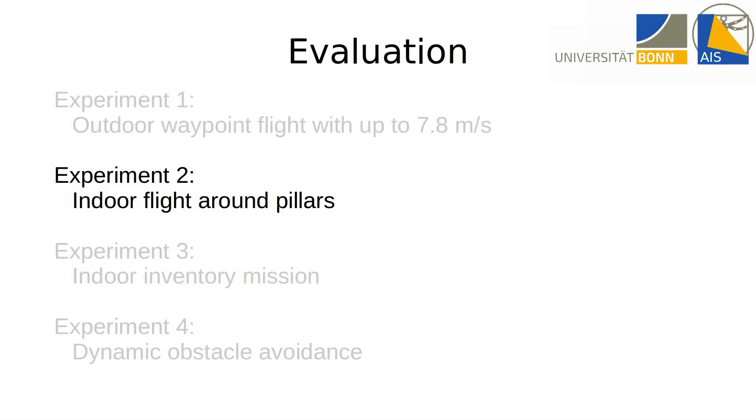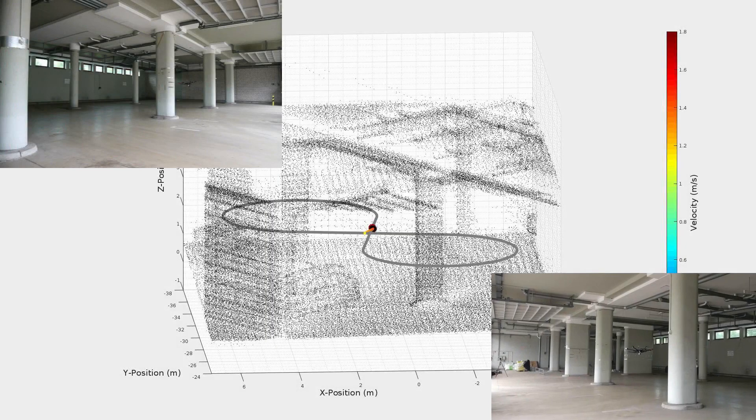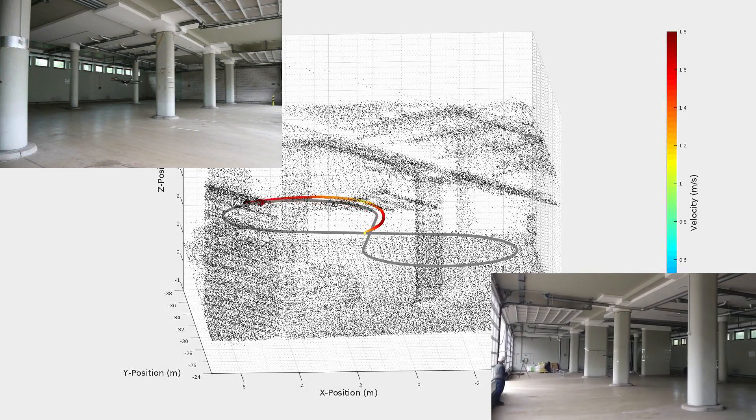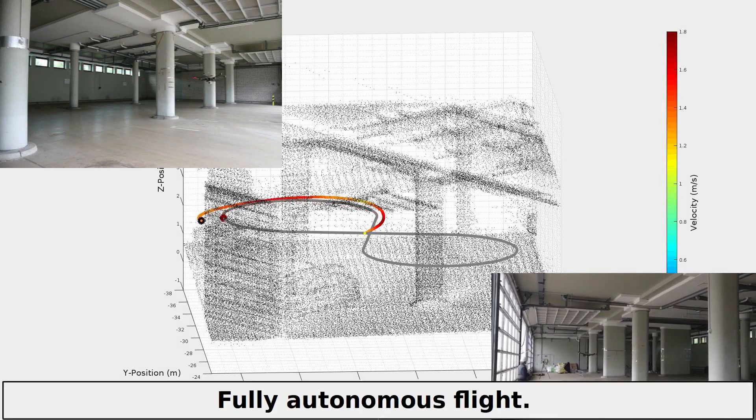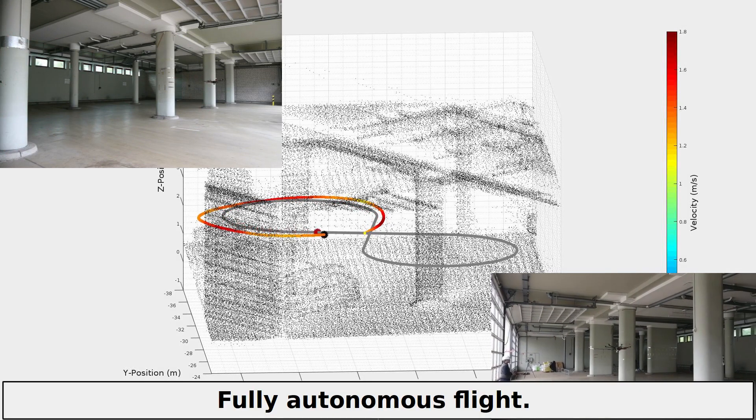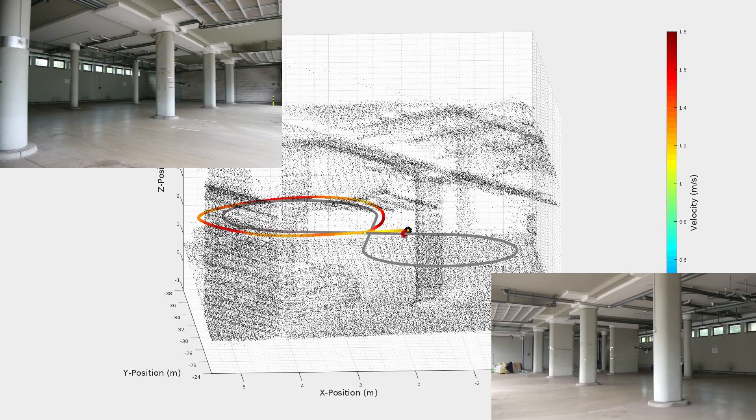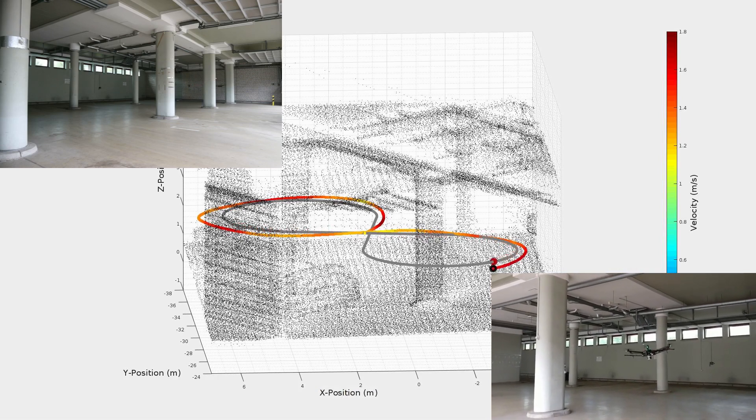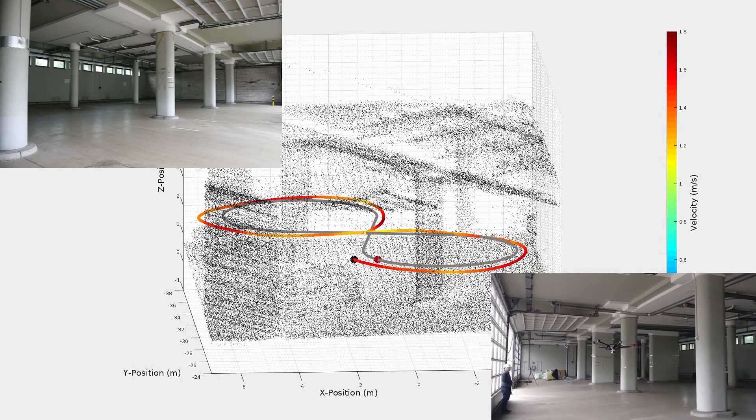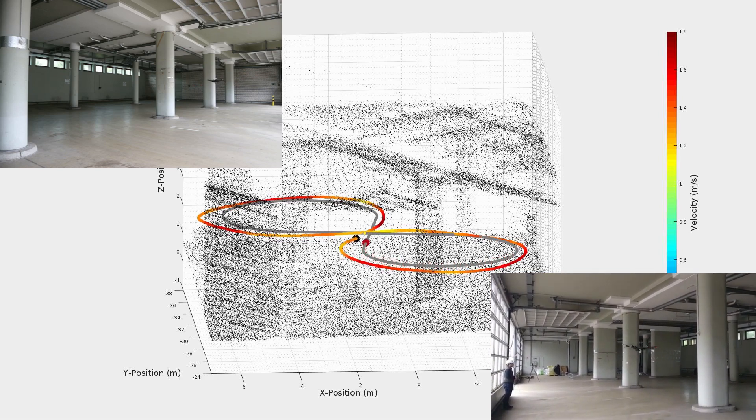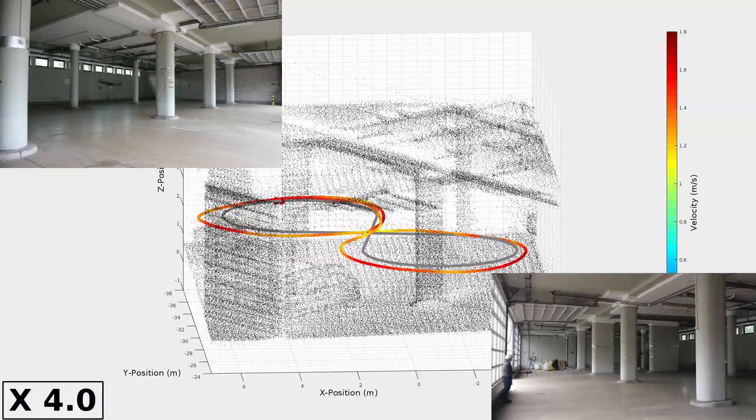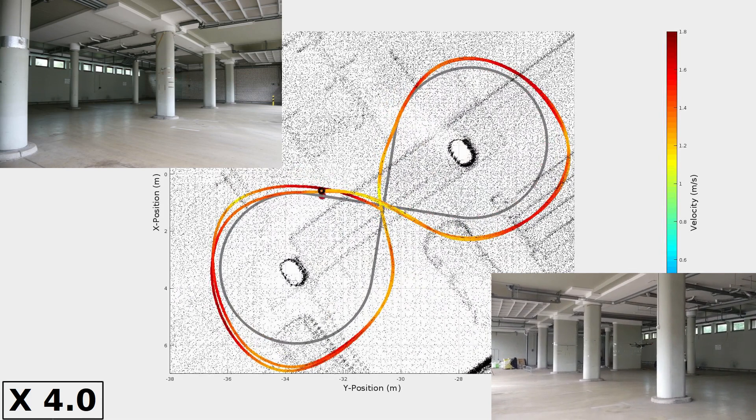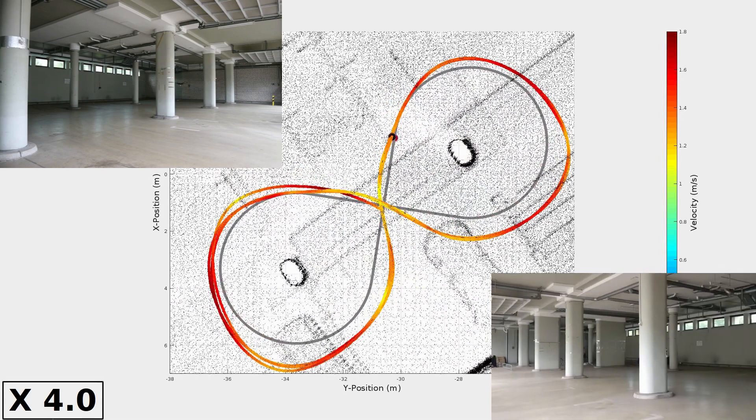In a second experiment, the MAV flies a figure-eight around two pillars in a garage. It can be seen that our method yields robust repeatability in four consecutive flights, despite turbulences close to obstacles and the ground.